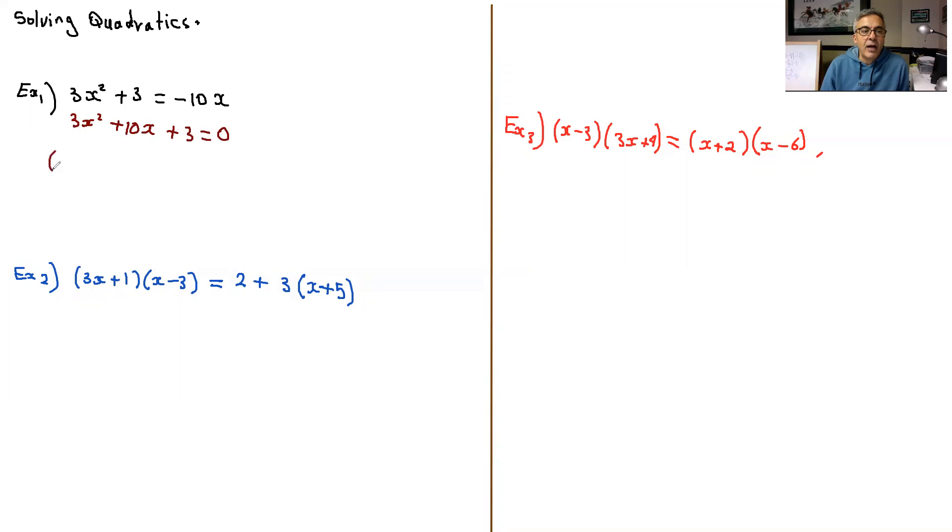Now I factor. So I'm looking for two numbers multiplied to give me nine, 3 times 3, and add to give me 10. And that would be nine and one. So I'm going to write x plus nine, x plus one. So the two numbers that we said, nine and one multiplied to give me nine and add to give me 10. So that's what I wrote here.